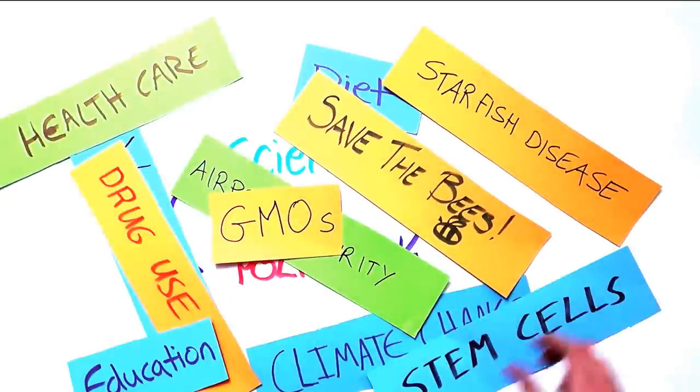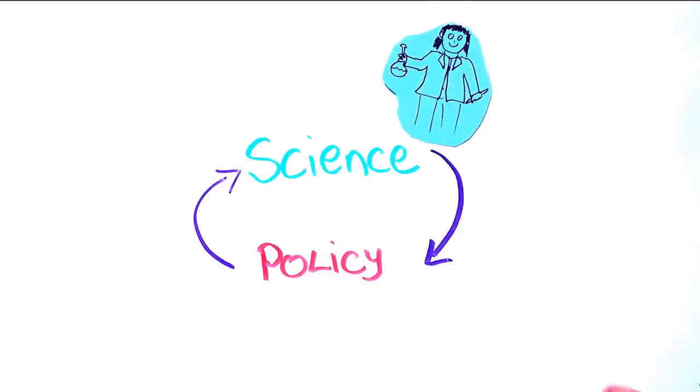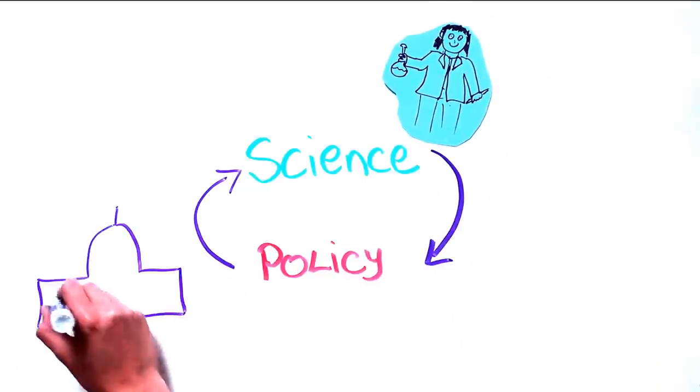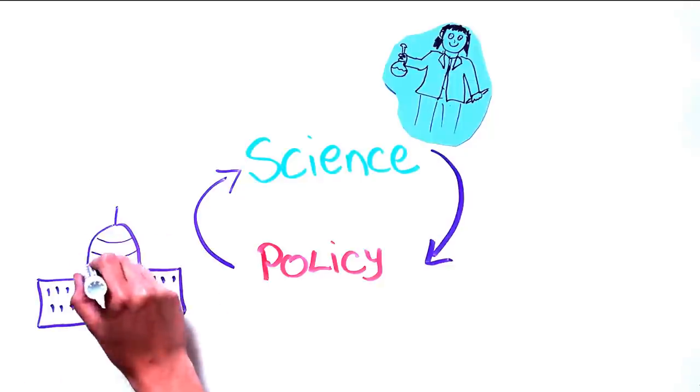Government policies on these issues are and need to be informed by science. How science informs government policy can, however, be a complicated process. Let's use the response to antibiotic resistance as an example.